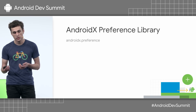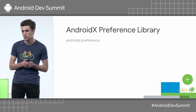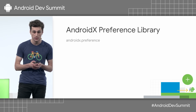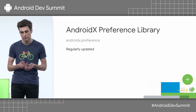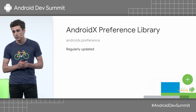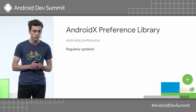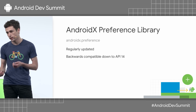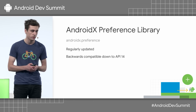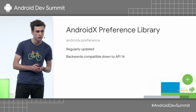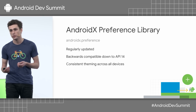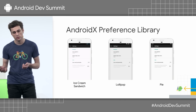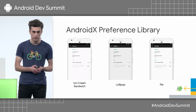The AndroidX preference library, previously known as the v7 and v14 preference support libraries, is unbundled from the framework. This means it can be rapidly updated with any new features and bug fixes we push. The library itself is backwards compatible down to API 14 and uses the same updated material theme across all your devices. This results in a consistent experience for your users.